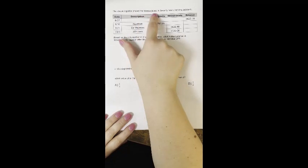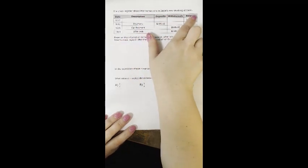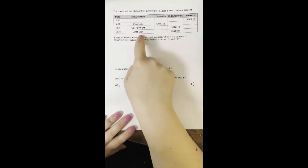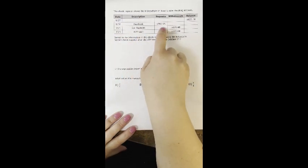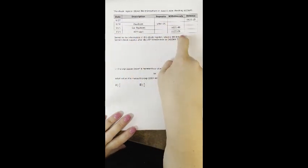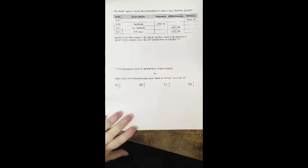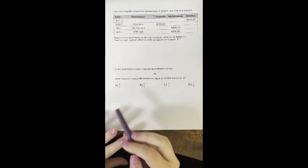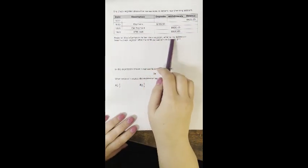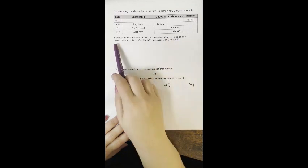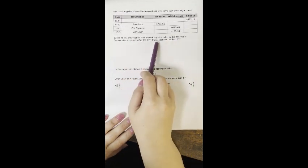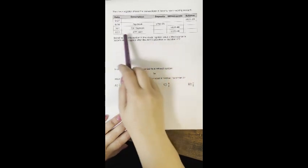So it says: the check register shows the transactions in Jason's new checking account. We have the date that the transaction happened, the description of what it is, whether it's a deposit or a withdrawal, and then the balance. Based on the information in the check register, what is the balance in Jason's check register after the ATM transaction on October 3rd?